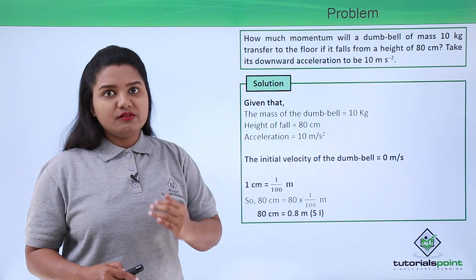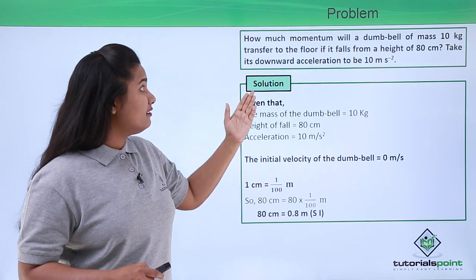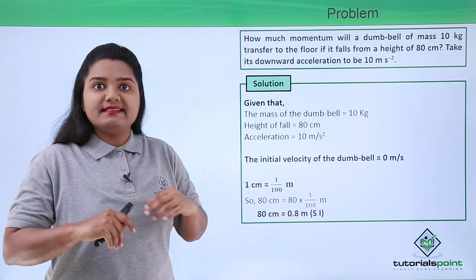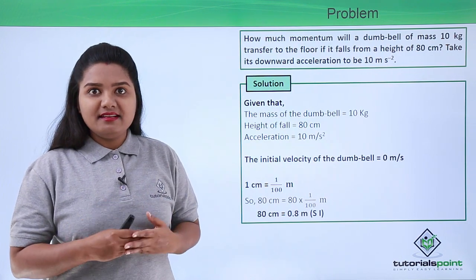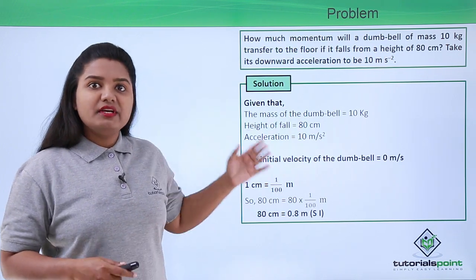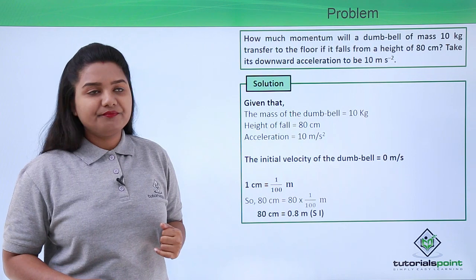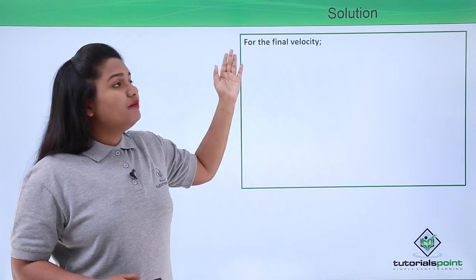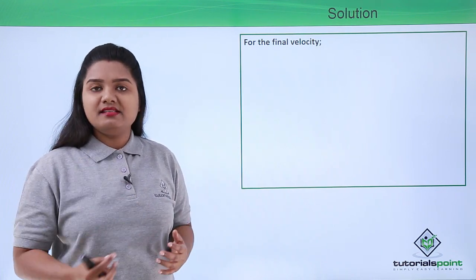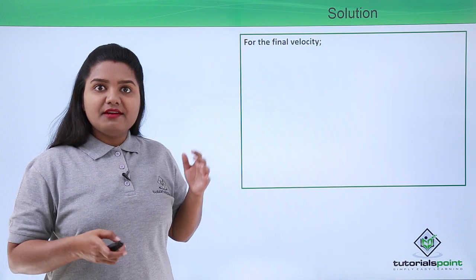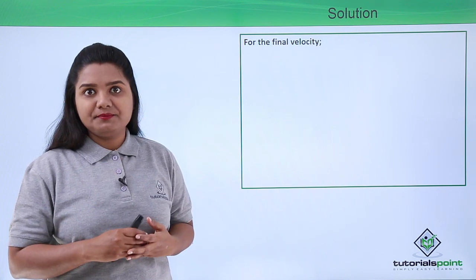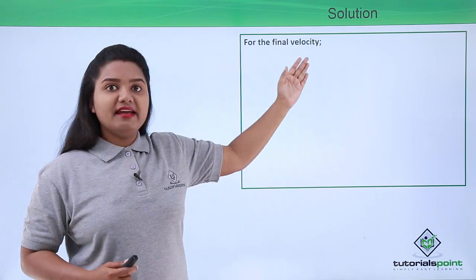What we need to find is the momentum that the dumbbell transfers to the ground when it hits. This momentum is exactly equal to the momentum the dumbbell possesses just before hitting the ground. We know the mass but not the velocity just before hitting the ground, and we need that velocity to calculate the momentum. So we need to first calculate the final velocity.